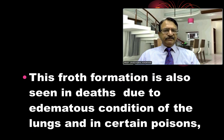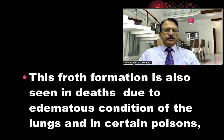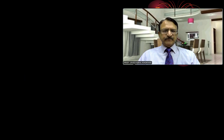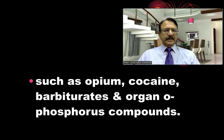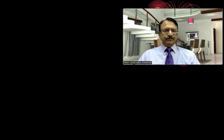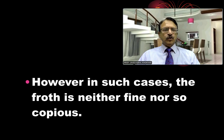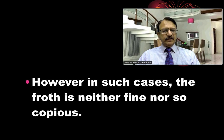This fine froth is due to the oedematous condition of the lungs, but it can also appear with certain poisons. In poisonings like opium, cocaine, barbiturates, and organophosphorus compounds, it is seen — but it is neither so copious, nor so white, nor so fine.